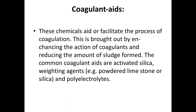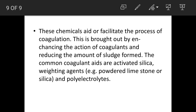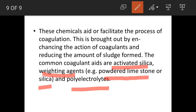The second type is coagulant aids. These are chemicals that aid or facilitate the process of coagulation. Coagulant aids can enhance the action of coagulants and reduce sludge formation. The coagulant aids used are activated silica, weighting agents such as powdered limestone, silica, and polyelectrolytes.